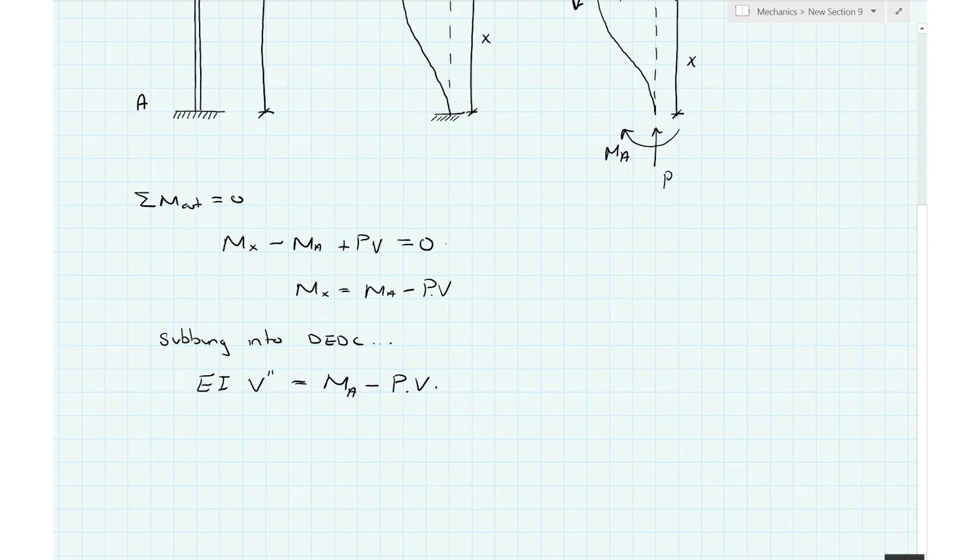We can rearrange and again using the same substitution for k that we had in our previous derivation. That equation, it's the same equation but it's a little bit easier to look at, and it is v prime prime plus k squared times v is equal to Ma over EI. Go ahead and call that equation 16.